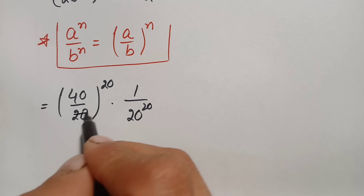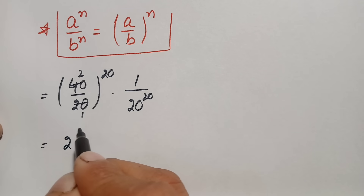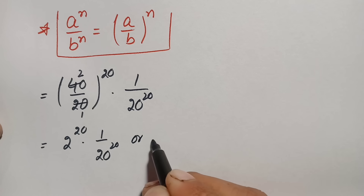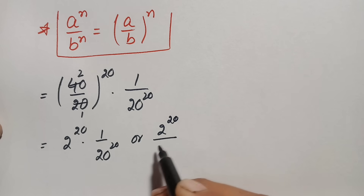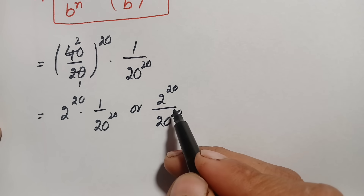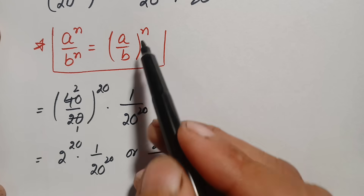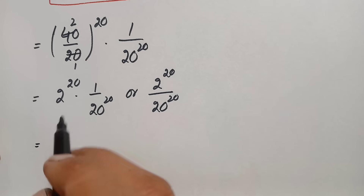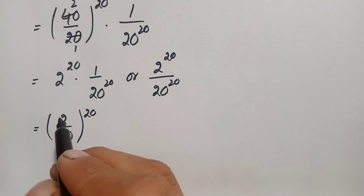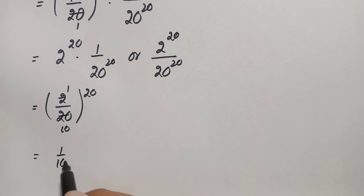Simplifying: 40 divided by 20 equals 2, so we get 2 raised to power 20 times 1 over 20 raised to power 20, which can also be written as 2 raised to power 20 divided by 20 raised to power 20. Applying the same-power identity again gives (2/20) raised to power 20, which simplifies to (1/10) raised to power 20.